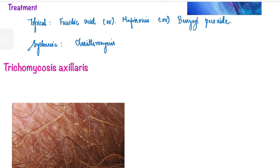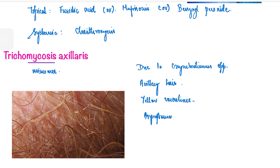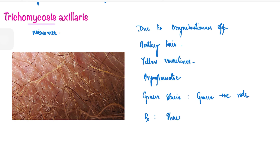The next Corynebacterium infection is trichomycosis axillaris. Although it has 'mycosis' in the name, it has nothing to do with fungus — it is a misnomer. It is caused by Corynebacterium species. What you see are yellow or brown concretions in the axillary hair. There is involvement of the axillary hair, as the name 'axillaris' suggests. Lesions are mostly asymptomatic. Gram stain from these concretions shows gram-positive rods.